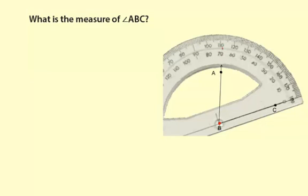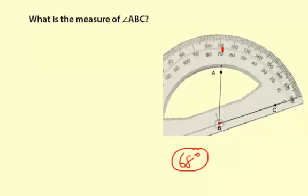It looks to me like that's about 68 degrees. So what that means is from ray BC to ray BA, there's a 68 degree rotation.